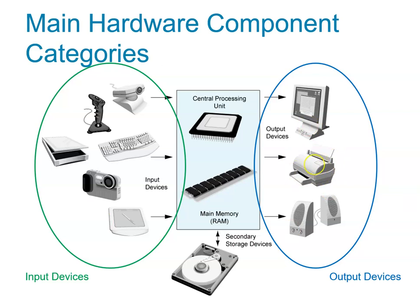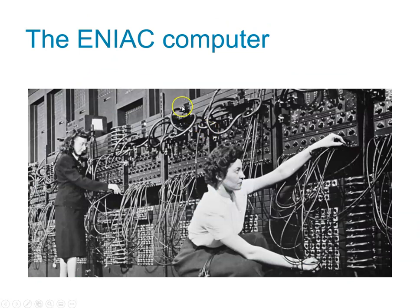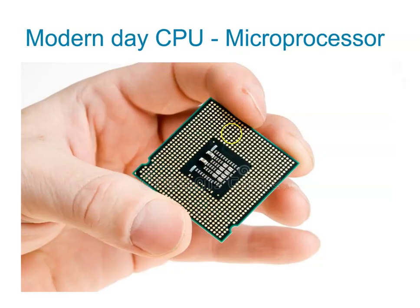Now let's look at the CPU in detail. Here we have something called the ENIAC computer — this is basically one big central processing unit. Even though it's huge, it's much slower. They came up with the ENIAC a long time ago. Nowadays our modern CPU is much smaller. This modern central processing unit, also known as a microprocessor, can fit in your palm and is much faster than that ENIAC machine.